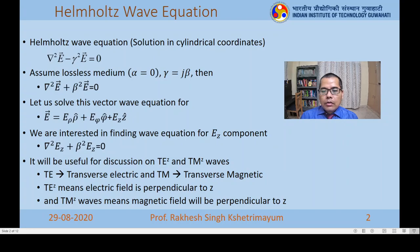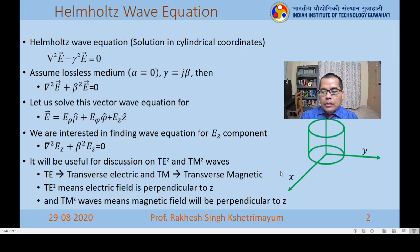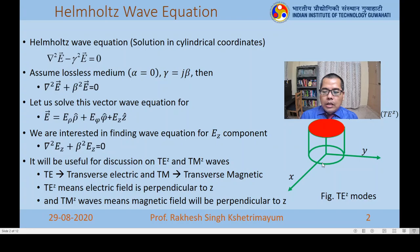We can illustrate this with a diagram. Consider an x-y-z axis with a cylinder. For TE-z waves, the electric field has no z-component, so it is confined in the rho-phi plane — it has only rho and phi components. Similarly, we can have TM-z waves. So we need to solve the wave equation in cylindrical coordinates for TE-z and TM-z waves.